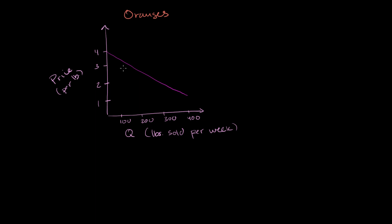So that's the willingness to pay or the marginal benefit of that incremental pound. But let's say you decide to set the price at $2 and you are able to sell 300 oranges in that week.